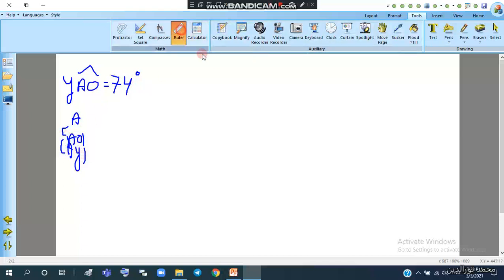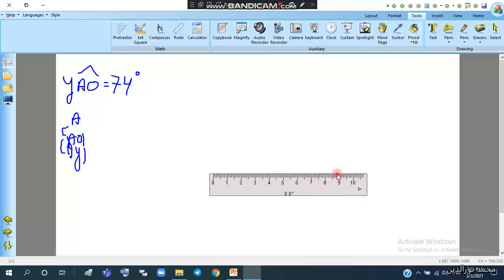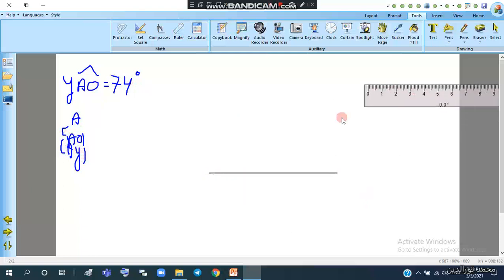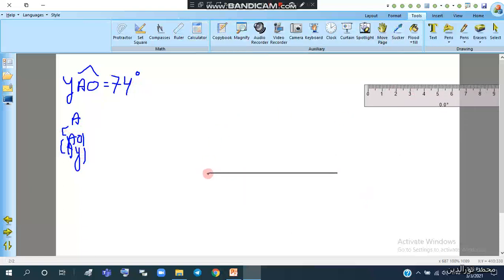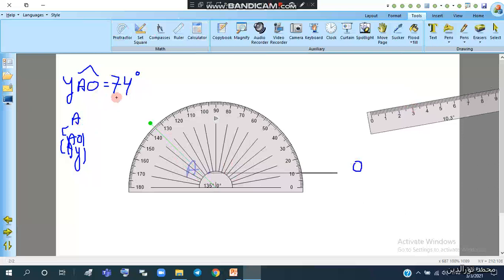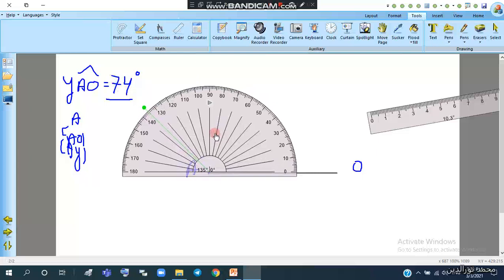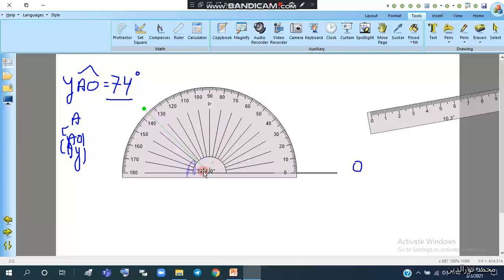Using the ruler, we will draw one of these two sides. This is side A. Then we will use the protractor so we can see this given measure, 74 degrees. The center of the protractor on the vertex of the angle, and this side should pass through zero reading.